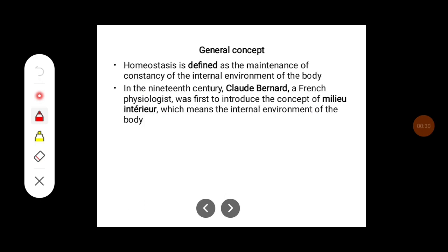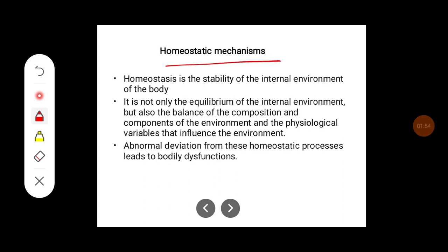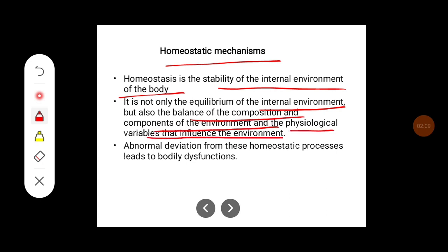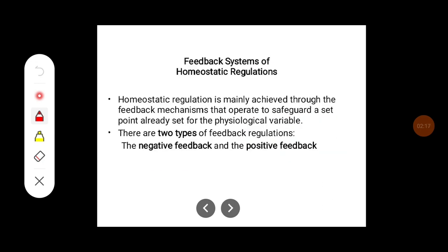Homeostasis is defined as the maintenance of constancy of the internal environment of our body. In the 19th century, Claude Bernard, a French physiologist, first introduced the concept of 'milieu intérieur,' which means the internal environment of the body. Homeostasis is not only the equilibrium of the internal environment but also the balance of composition and components of the environment and the physiological variables that influence it. Abnormal deviation from these homeostatic processes leads to bodily dysfunctions.